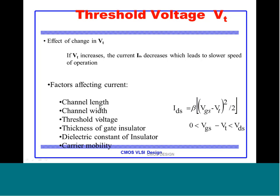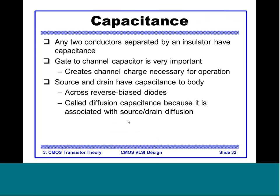Let us review what factors affect the current: the W/L ratio (channel width and length), the threshold voltage VT, the gate insulator thickness T_ox (contained in β), the dielectric constant (contained in β), and the carrier mobility (also contained in β). We have seen the dependence of current on VGS and VDS.